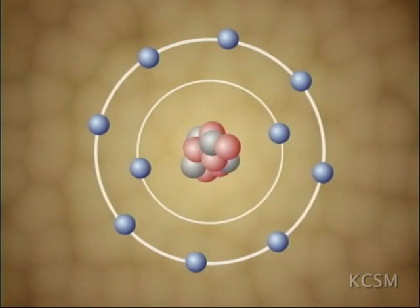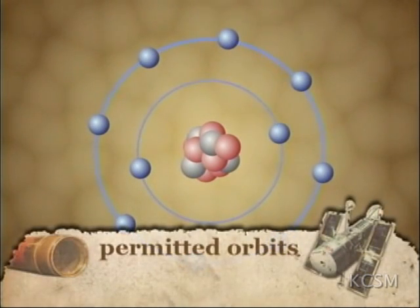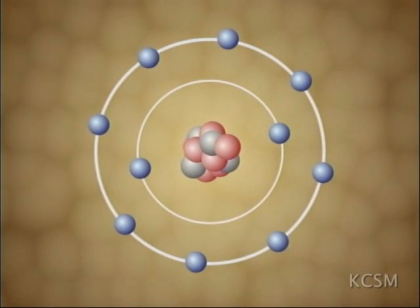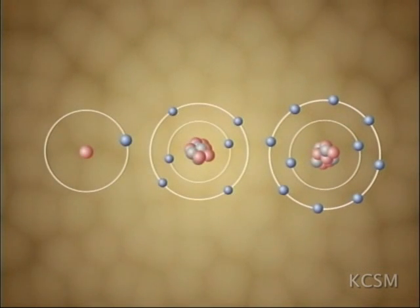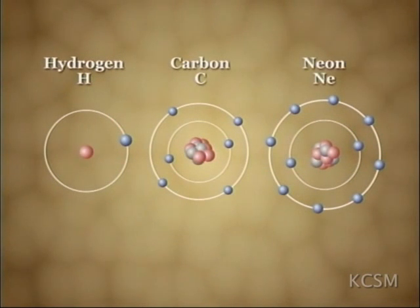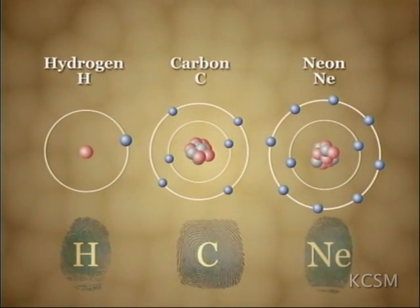An electron can orbit the nucleus of an atom only at specific distances known as permitted orbits. The number of protons in the nucleus determines the arrangement of these orbits. Here we have an illustration of an atom of hydrogen, one of carbon, and another of neon. The combination of orbits is unique to each element and can be used to identify them, much like fingerprints identify individual humans. No two elements have the same combination of permitted orbits.